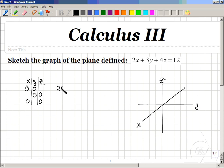In the first case, 2 times 0 plus 3 times 0 plus 4z equals 12. So 4z equals 12, and z is 3.